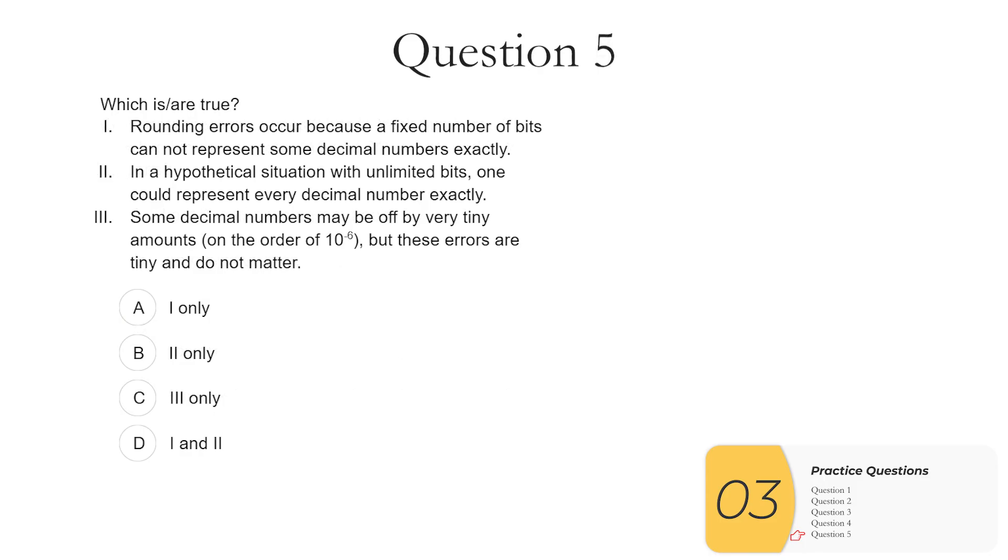And question 5. Which of these are true? 1. Rounding errors occur because a fixed number of bits cannot represent some decimal numbers exactly. This is true. This is pretty much the definition of rounding errors. 2. In a hypothetical situation with unlimited bits, one could represent every single decimal number exactly. This is not true. Some numbers, no matter how many bits you have, cannot be represented. You could think of this kind of like irrational numbers. No matter how many decimals you go out, you won't be able to represent the number exactly. And 3. Some decimal numbers may be off by very tiny amounts, but these errors are tiny and do not matter. This is true sometimes, but it is not true all of the time. Especially if I power these numbers a lot of times, use these over and over again, these errors can grow and grow and grow to where at some point they will matter a lot. The example I gave of the stock price being off by a factor of 2 is an example of this. So the answer here is A, 1 only.